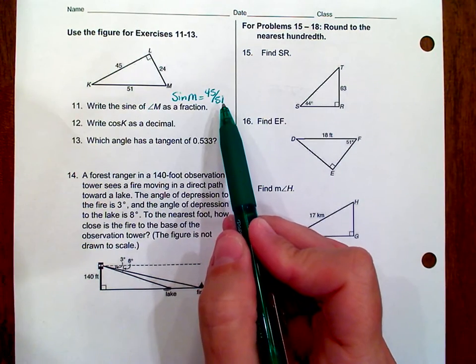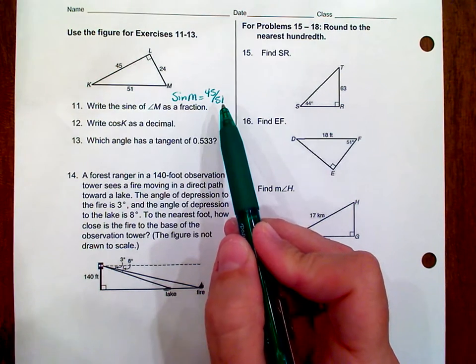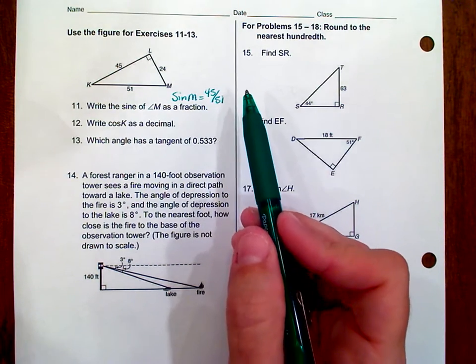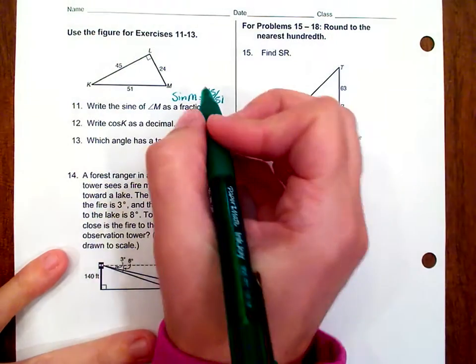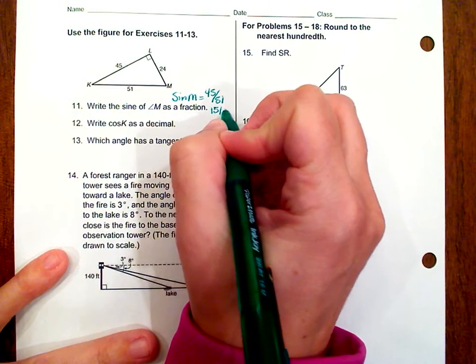When you write your ratio, it needs to be written as a simplified fraction. And you can reduce this to 15 over 17. So, the correct answer for number 11 would be 15 over 17.